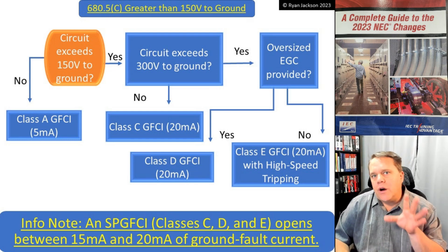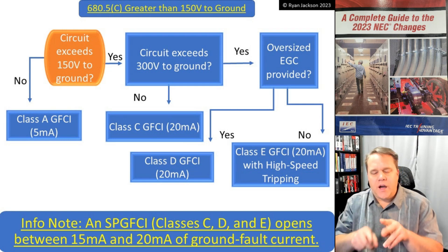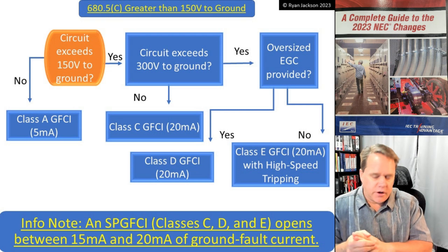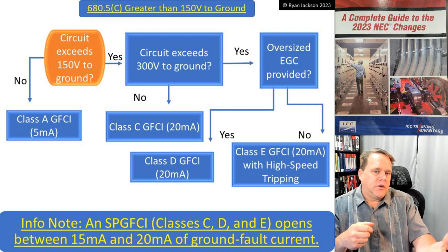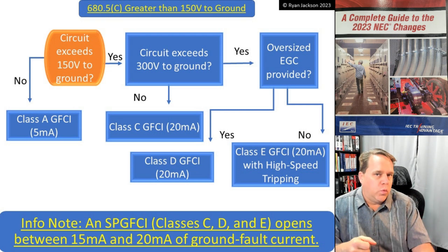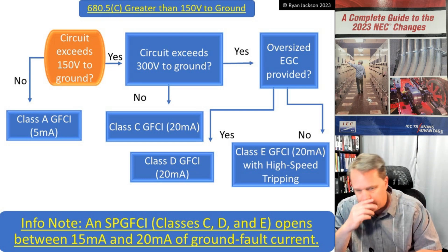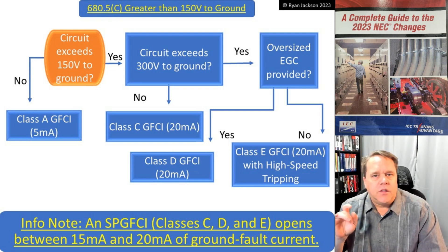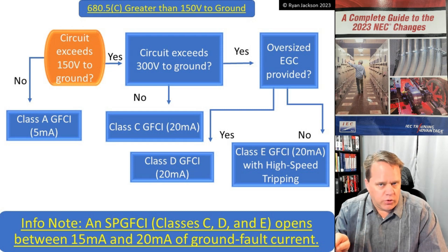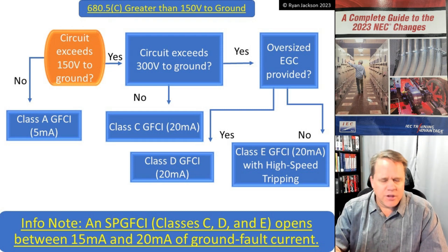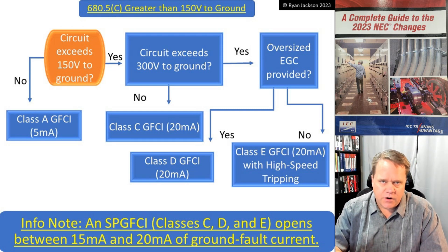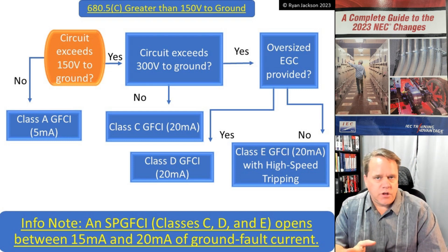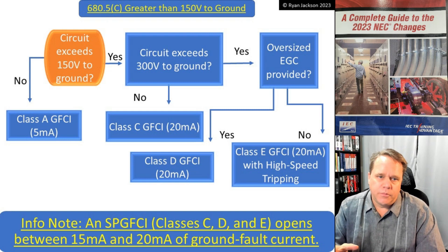They work on the same principle as a GFCI — they monitor the difference in currents between the circuit conductors. Whether you call it leakage current, ground fault current, or residual current, an SP GFCI operates at Class C, D, or E. You don't have to memorize all these classes. Class A is what we all know and love — that's what's in your house and your commercial buildings.